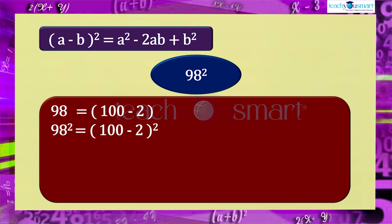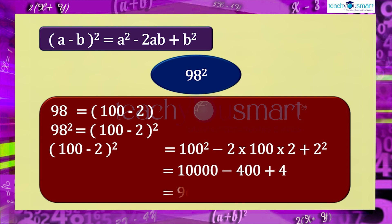Using the identity (a minus b) the whole square equals a square minus 2ab plus b square: (100 minus 2) the whole square equals 100 square minus 2 multiplied by 100 multiplied by 2 plus 2 square, which equals 10,000 minus 400 plus 4 equals 9,604.